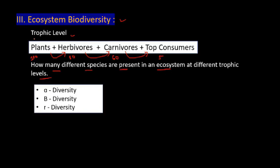Ecosystem biodiversity can be further studied using three measures: alpha diversity, beta diversity, and gamma diversity.